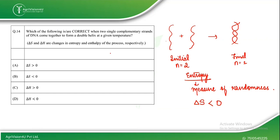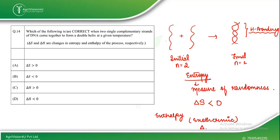When the double helical structure forms, hydrogen bonding takes place between the strands. During hydrogen bond formation, energy is released — the process is exothermic. Therefore, ΔH is less than 0. The answer is ΔS < 0 and ΔH < 0.